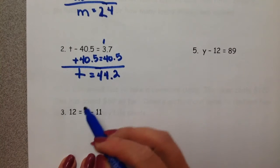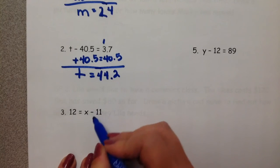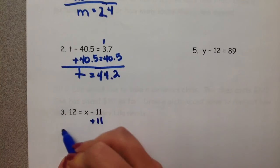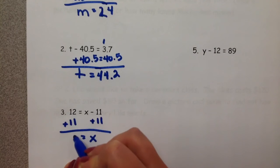Number three, 12 is equal to x minus 11. Instead of subtracting 11, we're going to add 11. But if we do it for one side, we have to do it for the other.